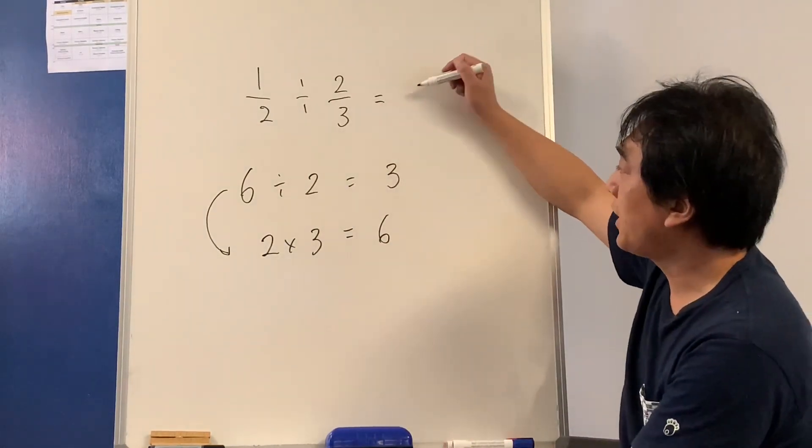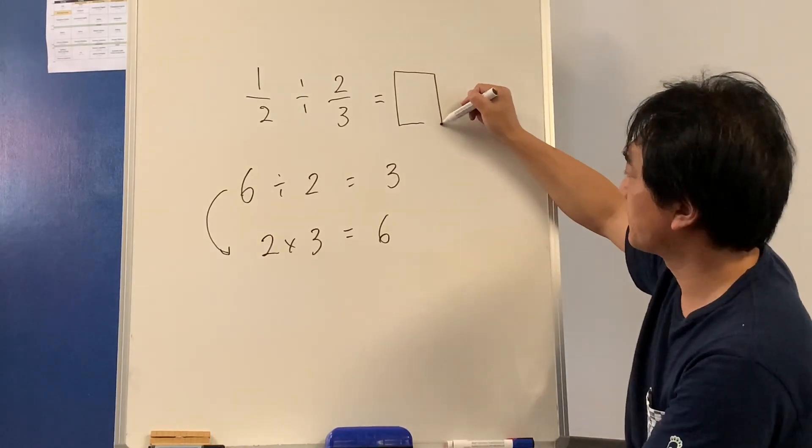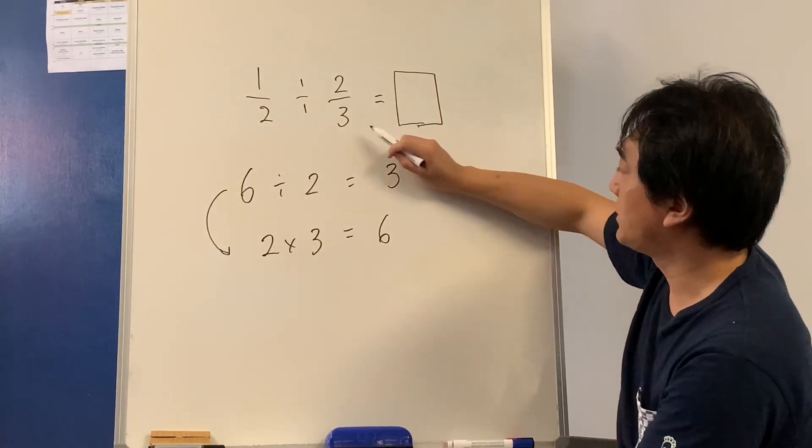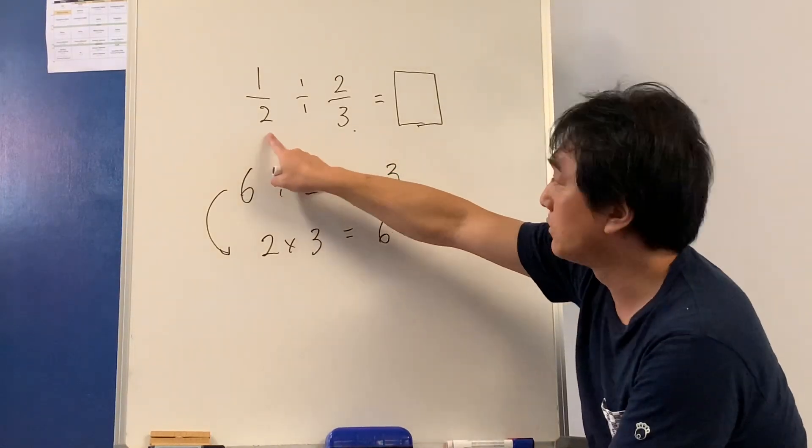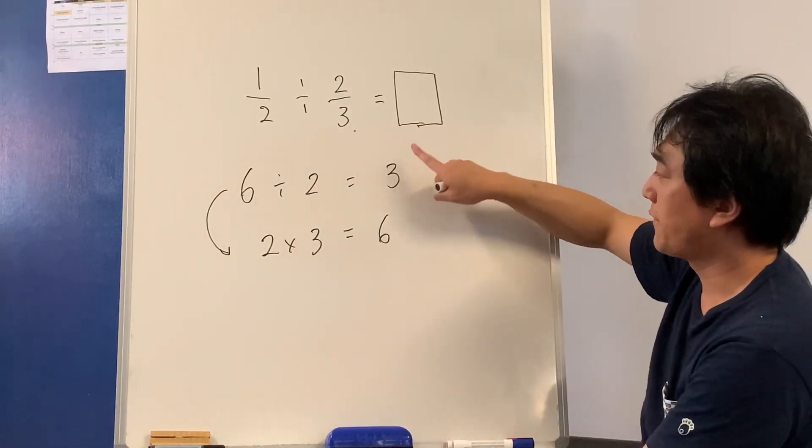So if I have a number, the answer here, if I multiply these two numbers, the answer should be one half. Do you get that?